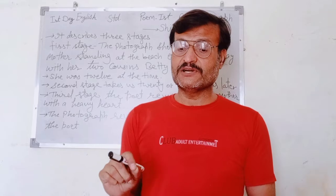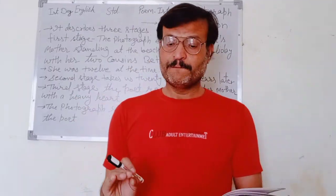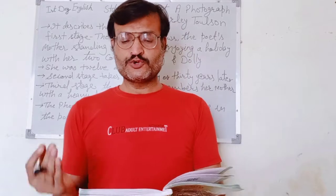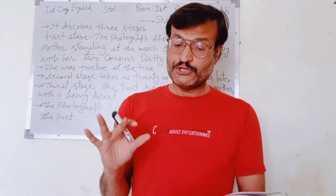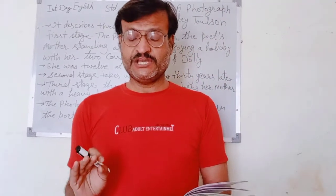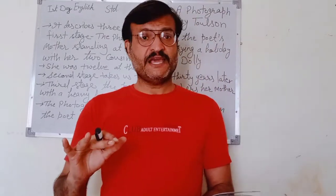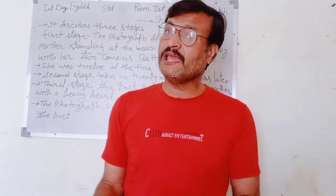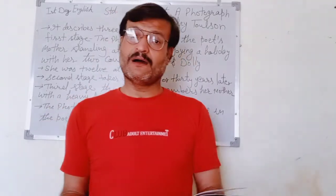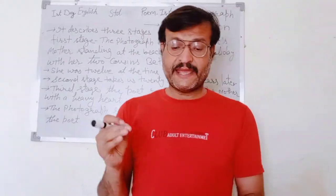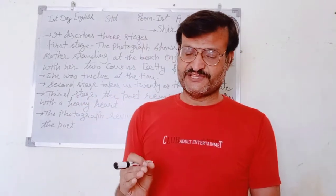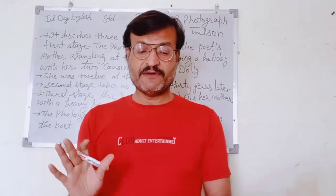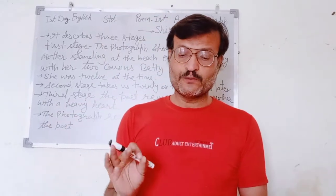'And she the big girl' — big girl means she was the eldest among all of them. 'Some twelve years or so' — some here means about, lag bhag barah saal ya usse zyada. 'All three stood still to smile through their hair' — sabhi tino still, nishchal khadi hui thi, to smile through their hair — hawa ke chalne se. My mother's — that was before I was born.